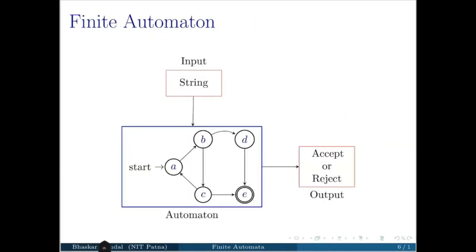In a more generalized way, you can show it like this. We give input string here. Notice that you have an input tape where you give the input string. Say you have I-N-T. This will read one character per time, or at a time. And it will answer you whether it is accept or reject. That is the output.